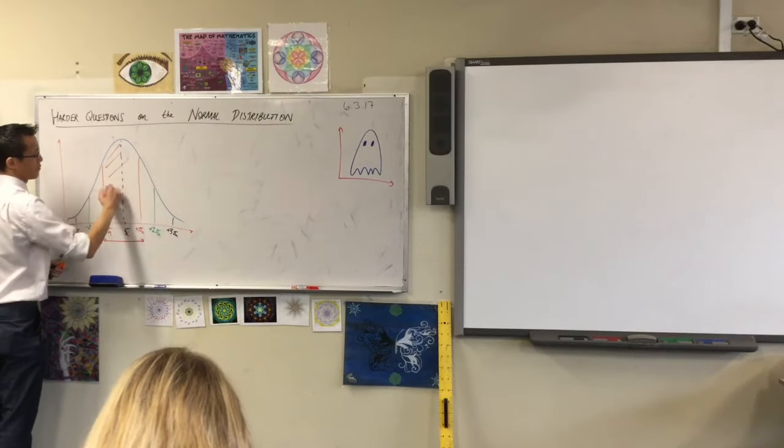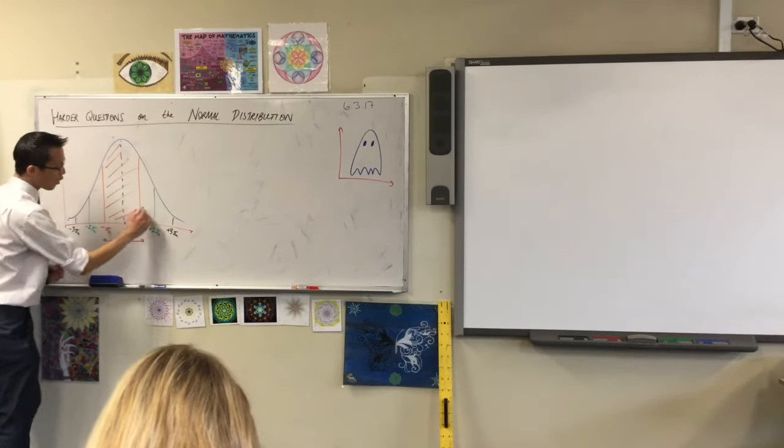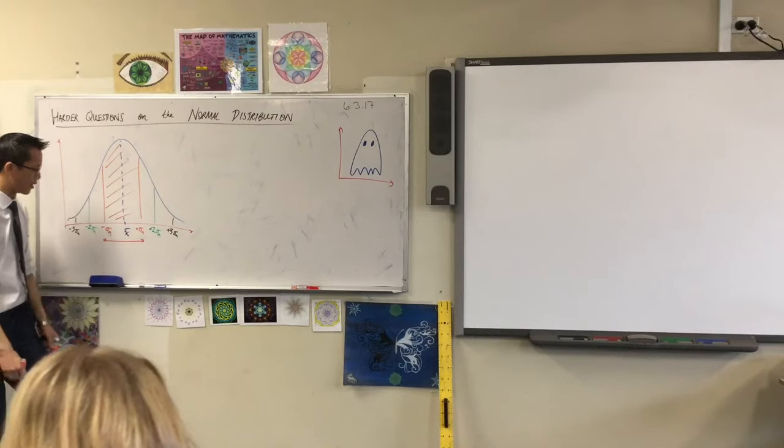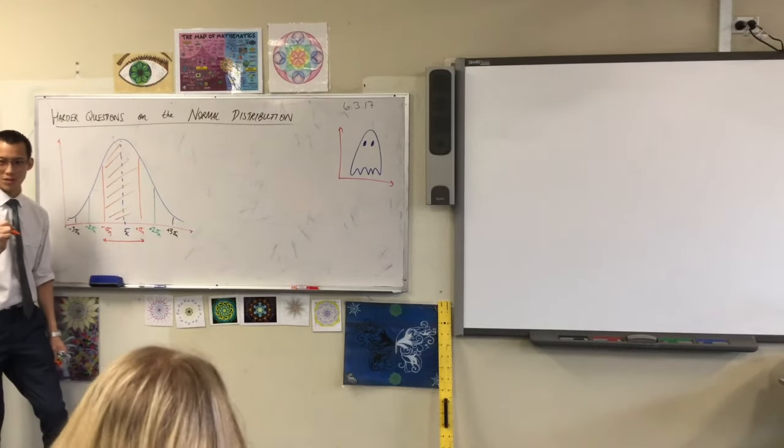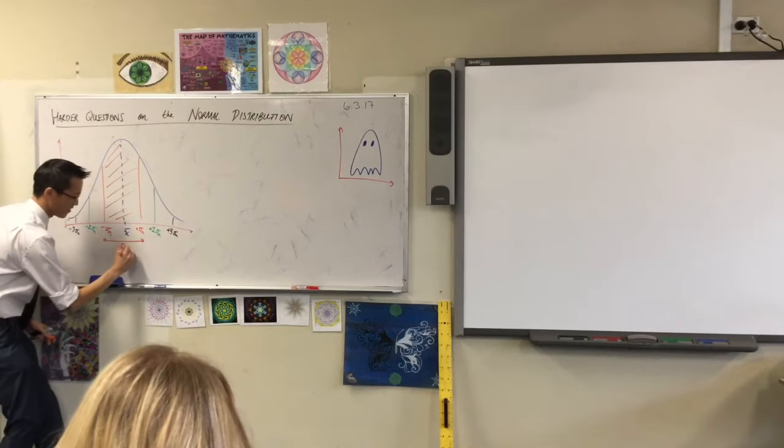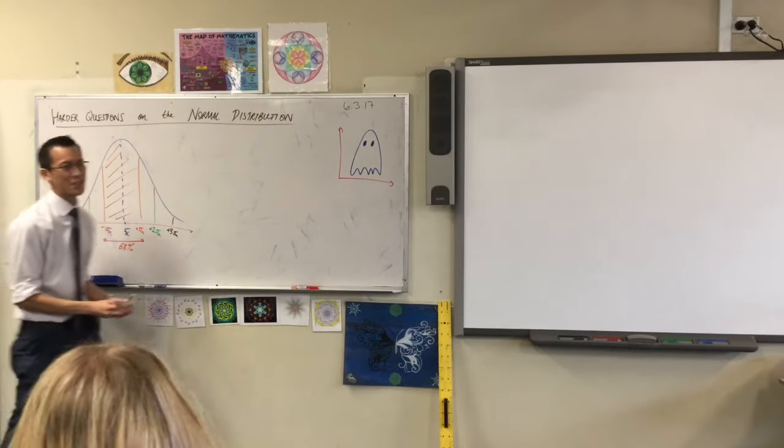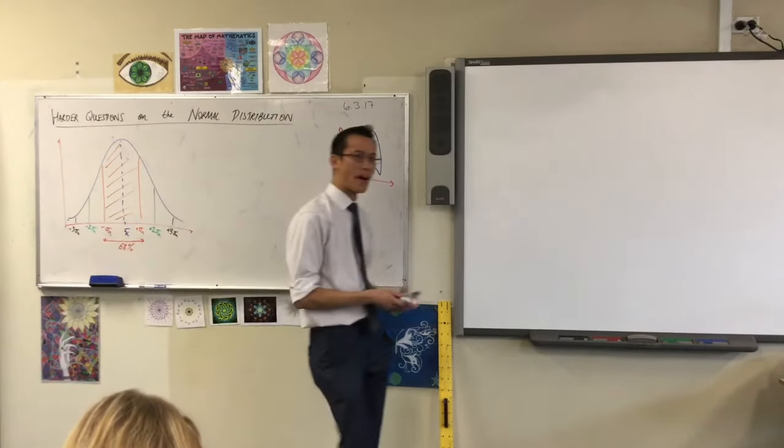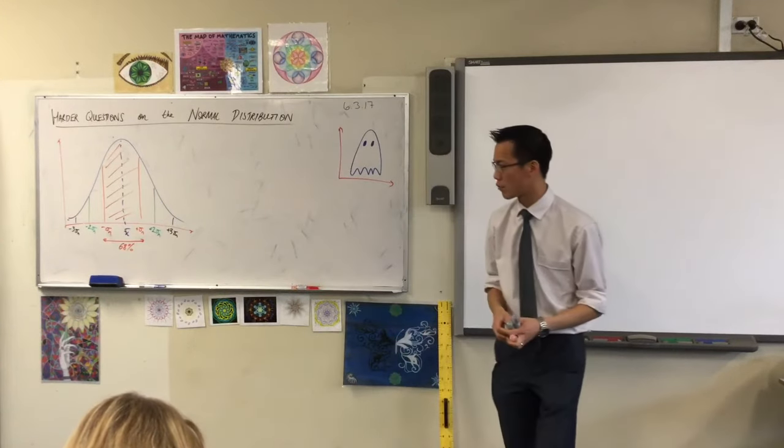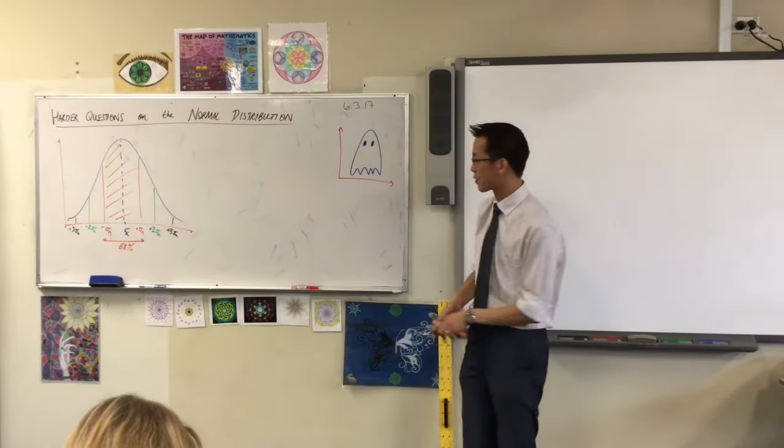So this orange portion of the graph, in here, do you remember what the percentage was? 68%, very good. 68% of the population, well over half, more than two-thirds, is in that little band, right?